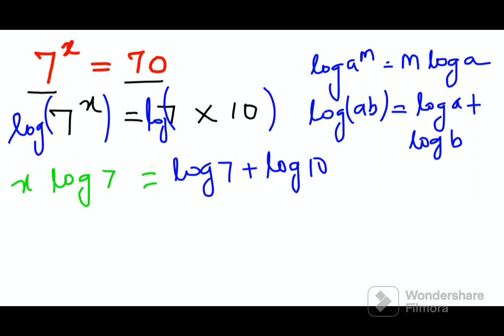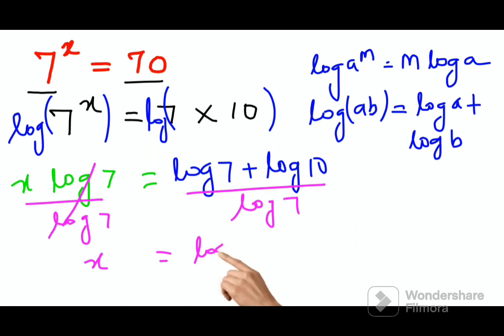So here we divide both sides by log 7. This gives us x equals log 7 over log 7 plus log 10 over log 7.